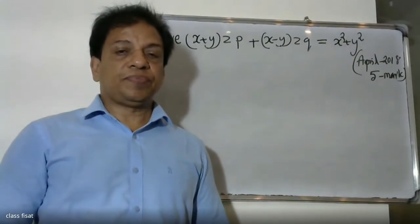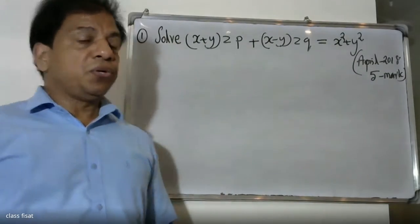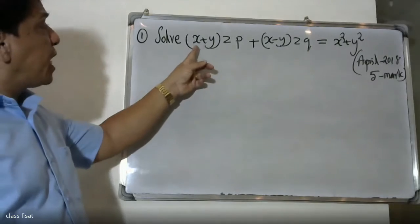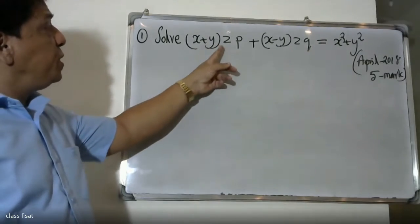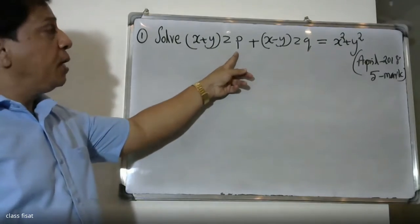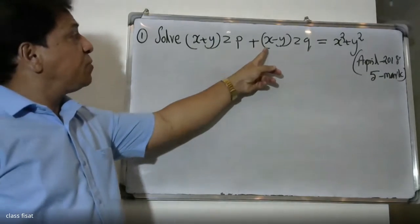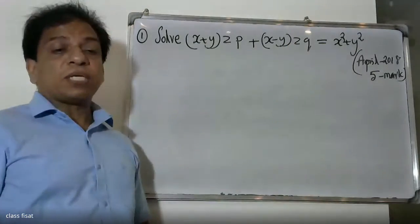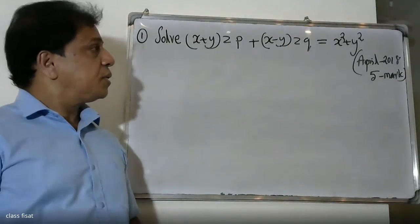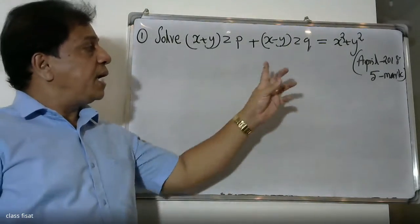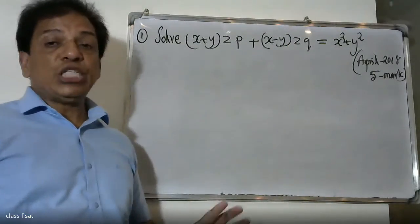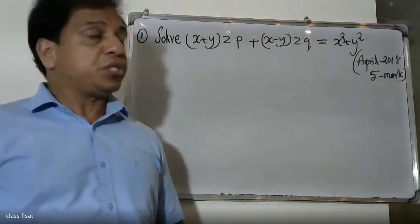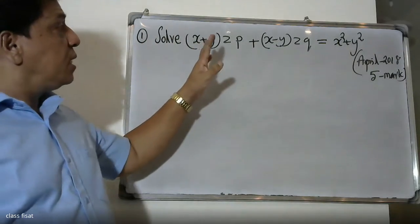Good morning students. The question is: solve (x+y)z·p + (x-y)z·q = x²+y². What the plan is — we need a plan for all the work.